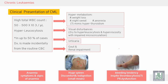To summarize the clinical presentation of chronic myeloid leukemia: there is a high white blood cell count — hyperleukocytosis. Most patients are discovered incidentally from a routine CBC.